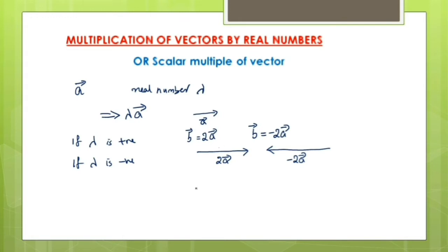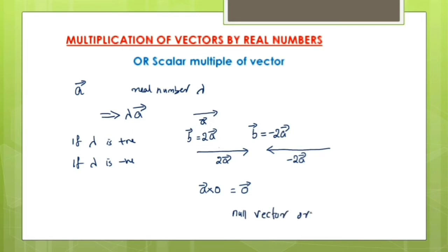Now imagine you are multiplying vector a with 0. We will be getting a vector whose magnitude is 0 and whose direction is arbitrary. The magnitude becomes 0, but it still has a direction in the same direction as the given vector a. This type of vector is called a null vector, also called a zero vector.